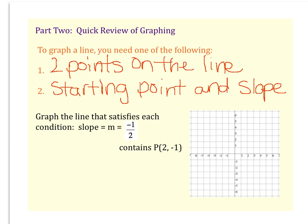An example of when you can graph a line with a starting point and the slope is right here where it says graph the line that satisfies each condition. We have a slope of negative 1/2 containing the point P(2, -1).